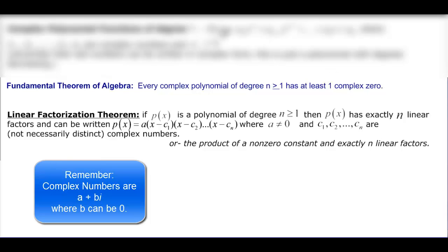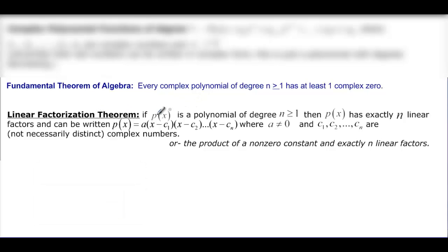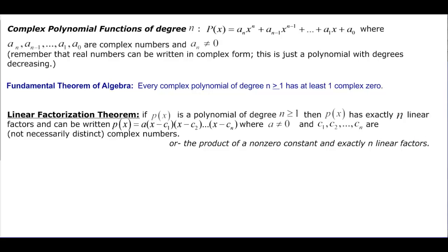2 is a complex number. It's 2 plus 0i. And then we have the linear factorization theorem that says you have this polynomial with degree n greater than or equal to 1, then it has exactly n linear factors and can be written as a times x minus c1 times x minus c2 and so on, as long as a is not equal to 0. And c1, c2, c3, these numbers are not necessarily distinct but they are complex numbers. Or the product of non-zero constant and exactly n linear factors.